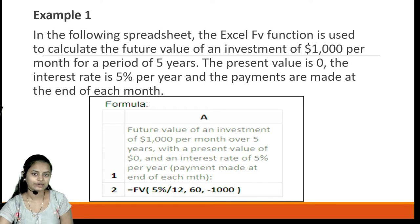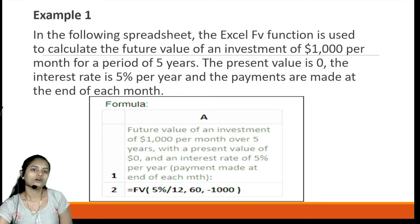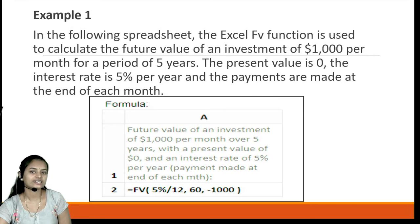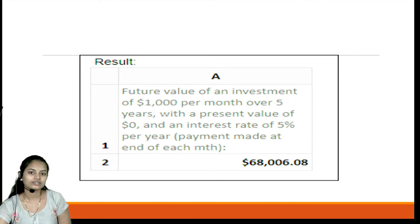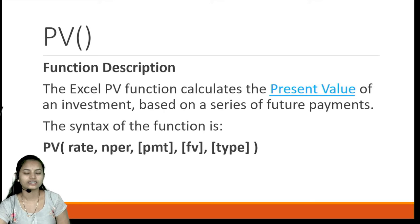Here is an example using the FV function in Excel. We calculate the future value of an investment of one thousand dollars per month for a period of five years. The present value is zero, the interest rate is five percent per year, and payments are made at the end of each month. We identify the parameter values, put them into the function syntax, and the result is shown in the picture.